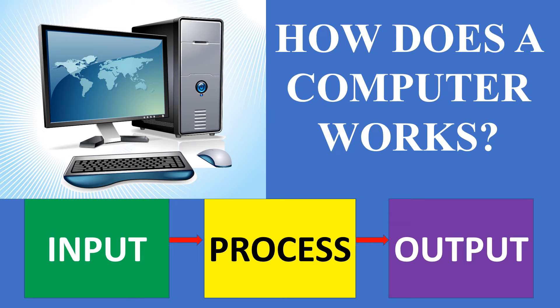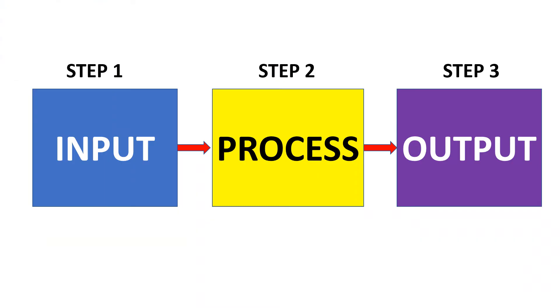How does a computer work? A computer works in three basic steps: Step 1 is input, Step 2 is process, and Step 3 is output.